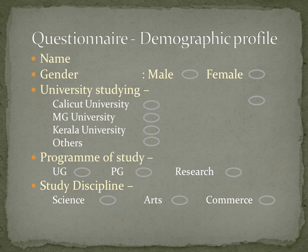The first part of the questionnaire will be the demographic profile of the respondent. Here I have used name, gender, university studying — with options Calicut University, MG University, Kali University, and others. The options given for a multiple choice question should be exhaustive, meaning all respondents should be able to select any one answer from the choices.